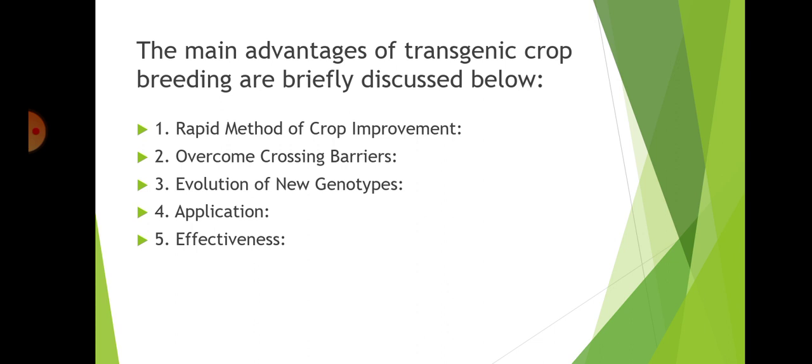The second advantage is overcoming crossing barriers. Transgenic breeding permits gene transfer between unrelated species and even between unrelated organisms — it permits gene transfer between plants and animals. For example, a freezing-resistant gene has been transferred from fish to cultivated tomatoes. Similarly, the albumin gene of chicken has been transferred into alfalfa for improving protein quality. There are many other examples of gene transfer between plants and animals.